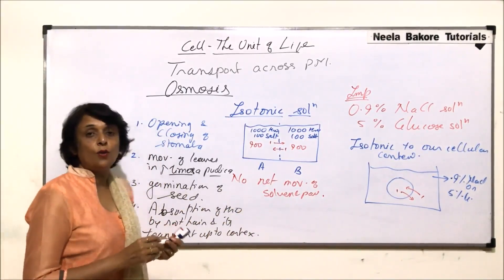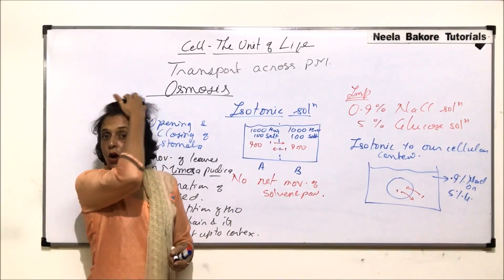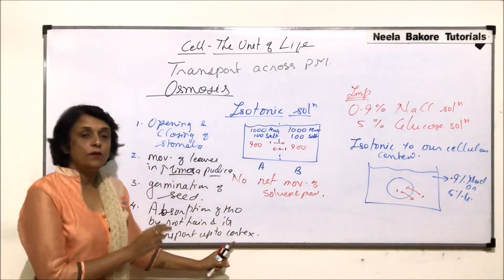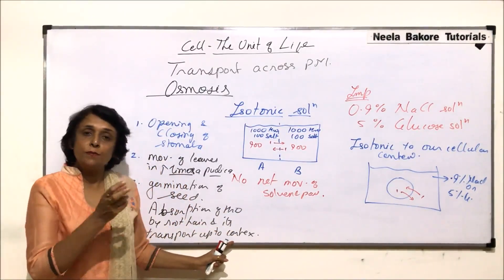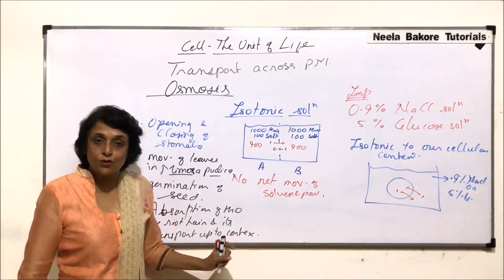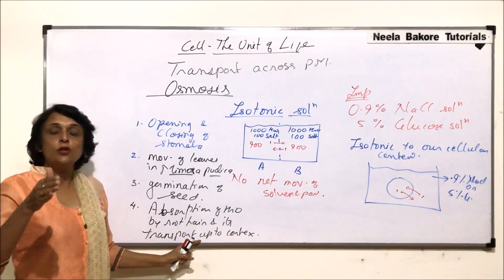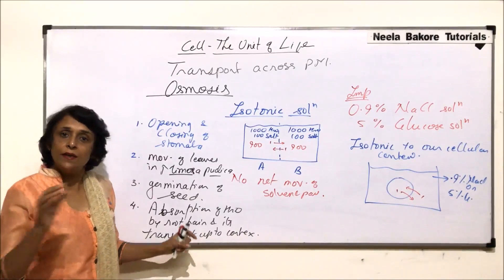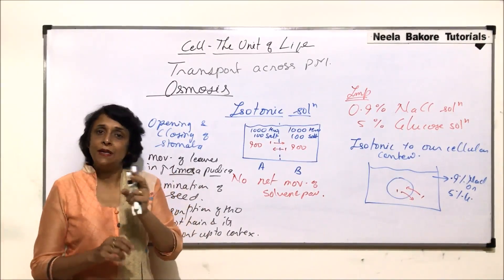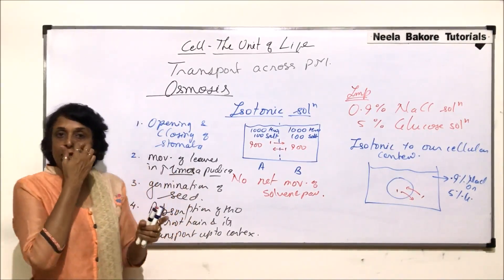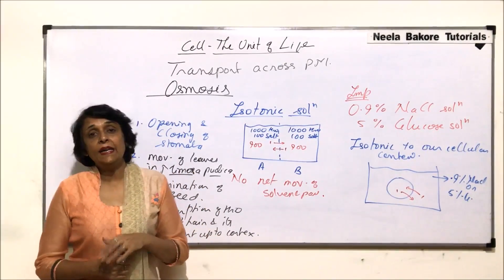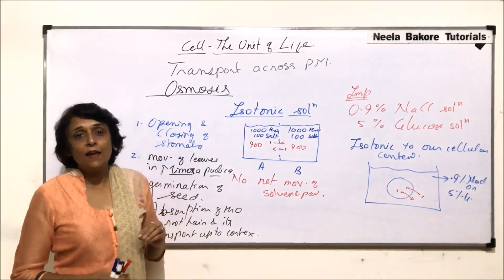This movement from the cortex to the xylem also occurs by osmosis. Apoplast and symplast movements are also involved, but water moves from one cell to the next by the same principle — from hypotonic to hypertonic — until it ultimately reaches the xylem.